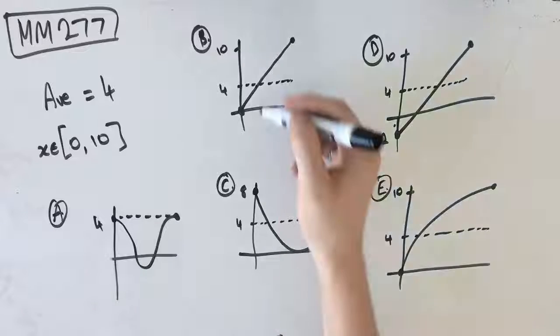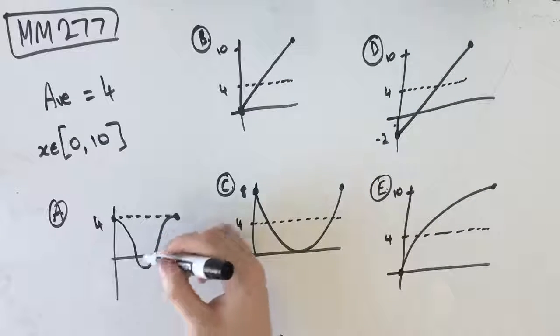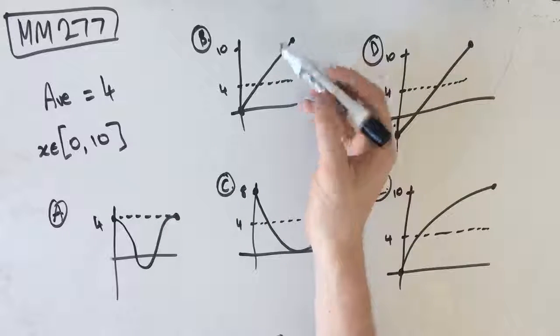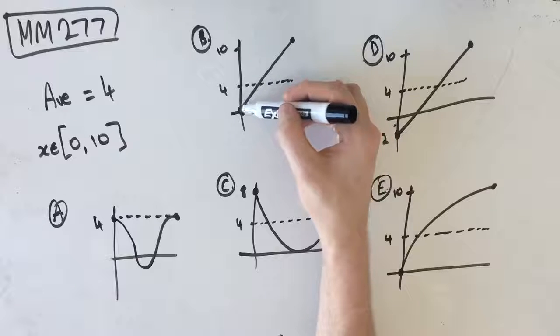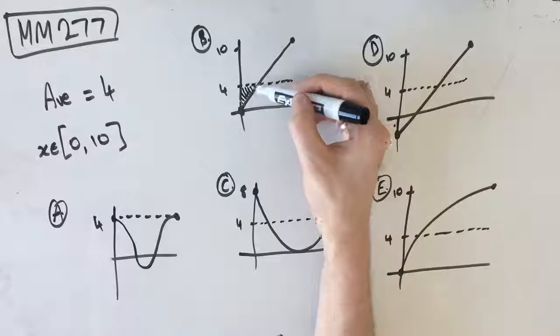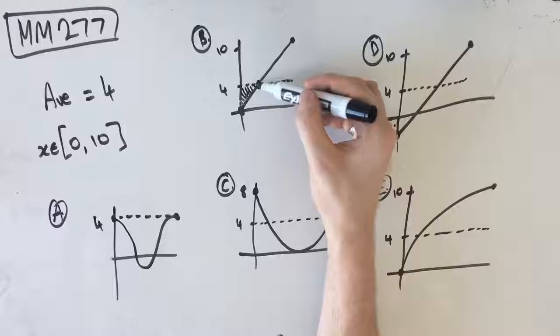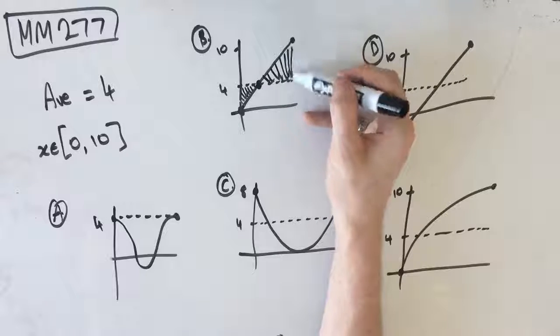So what I mean by that is, this is a bad example because I'm not going to be able to illustrate it properly, but let's go with B for a second. The average value of 4 means that the area between here and here, and then after this crossover point here to here, is going to be the same.